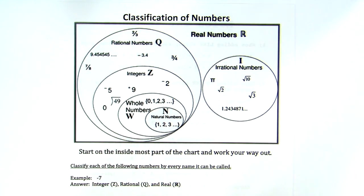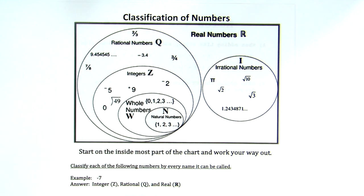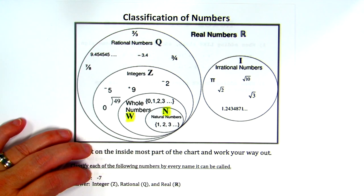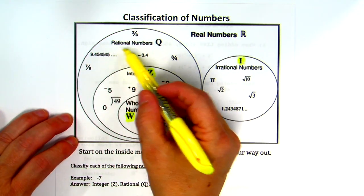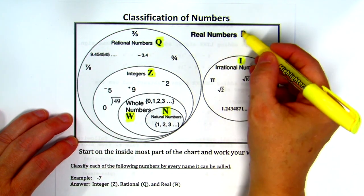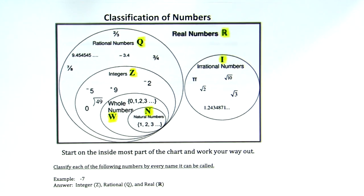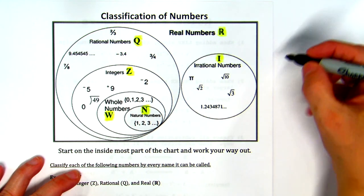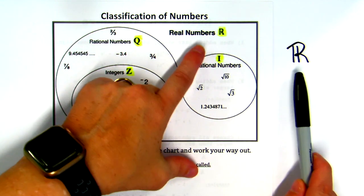Sometimes questions will write out the words — rational, real, integer, whole number — but other times you'll see capital letters. Upper-level math classes use shorthand: natural numbers is capital N, whole numbers is capital W, integers is capital Z. It kind of has to be Z because if we let irrational numbers use I, we can't have two of the same letter. Rational numbers are Q, and real numbers are denoted by a double-bar R.